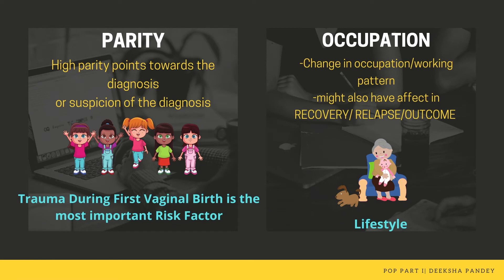High parity has been blamed as the reason for prolapse since ages. Though it might raise a suspicion of the diagnosis, the present understanding says it is not an absolute. In day-to-day practice, we keep seeing patients who have high parity but have no pelvic organ prolapse or pelvic floor relaxation. However, there may be patients who have delivered only one child, and sometimes a patient may present with prolapse without any history of vaginal birth. Occupation or a recent change in occupation might explain why the patient has presented with symptoms now.